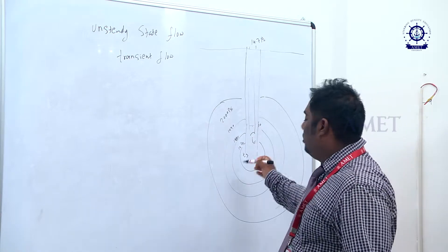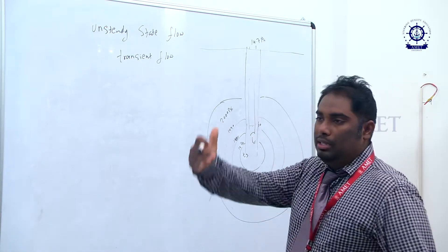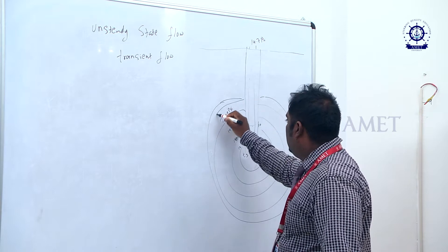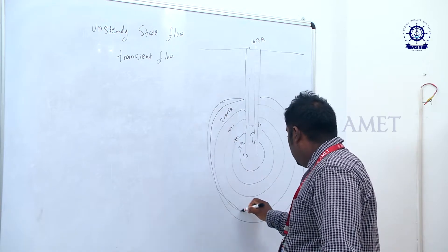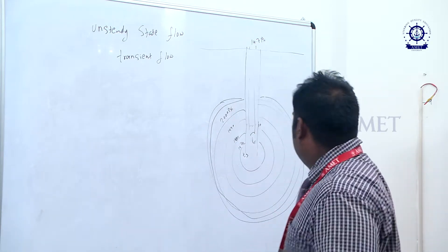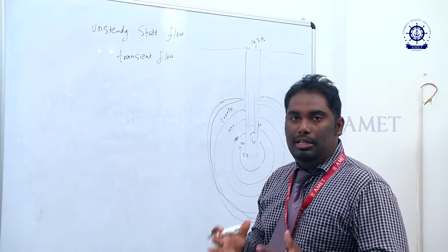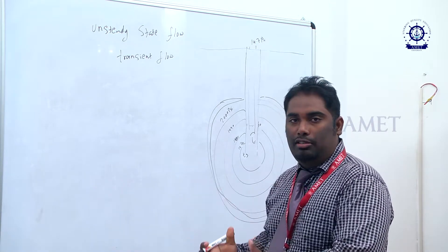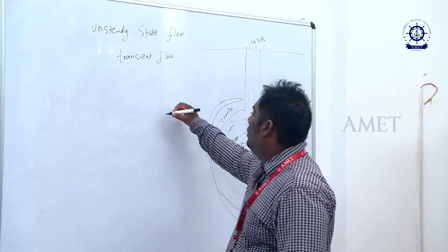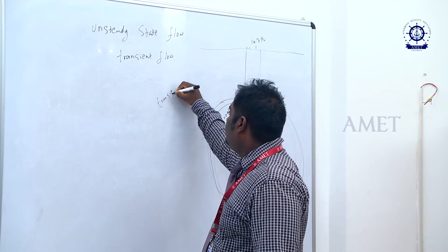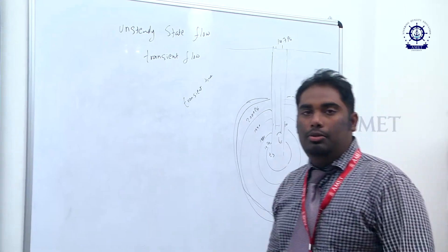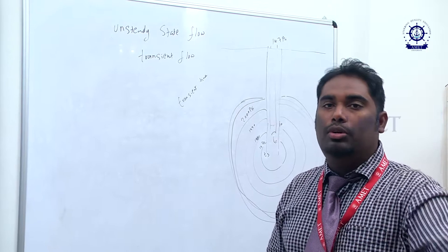The pressure difference will go like a ripple towards the end of the reservoir. Slowly, at a particular time, it will go to the edge of the reservoir boundary and finally touch the outer boundary. There is a particular time taken for this pressure drop to travel from the well to the outer boundaries. That particular time we name as transient time. Transient time is the time during which the pressure drop moves from PWF to the outer boundary.